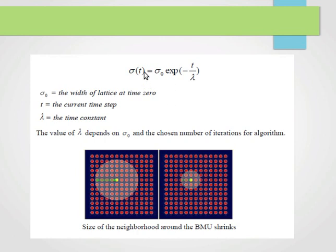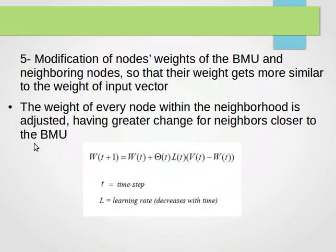The decreasing is done as follows: sigma of t equals sigma zero e to the power minus t over lambda. Sigma zero is the width of the lattice at time zero. So at the beginning, sigma zero is the width of the lattice. If we have n by n, then sigma zero is n in the beginning. t is the current time step as we iterate, and lambda is the time constant. The value of lambda depends on sigma zero and the chosen number of iterations for the algorithm. Here we notice that the size of neighborhood around the BMU keeps shrinking and keeps getting smaller.